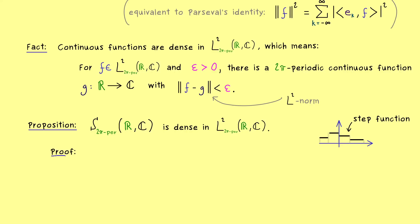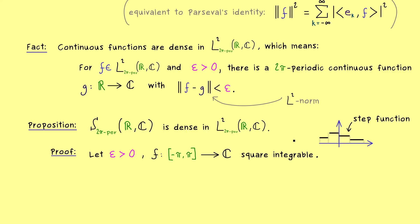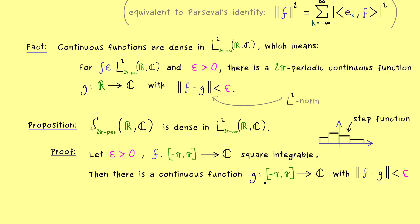So we are ready for the proof of this proposition. We assume an arbitrary epsilon greater than zero and an arbitrary square integrable function f, defined on the closed interval from minus π to π. Such a function f represents a whole equivalence class in our L2. What we want to show is that every such function can be approximated by a step function with respect to the L2 norm. We can already use the fact that we can approximate f with a continuous function g, chosen so that the distance to f is less than our given epsilon.